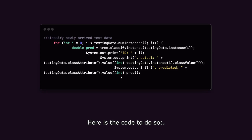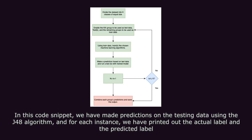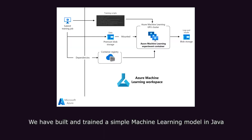Here is the code to do so. In this code snippet, we have made predictions on the testing data using the J48 algorithm, and for each instance, we have printed out the actual label and the predicted label. And that's it — we have built and trained a simple machine learning model in Java.